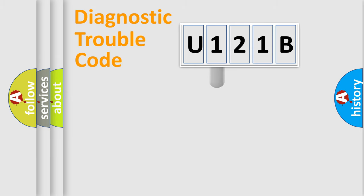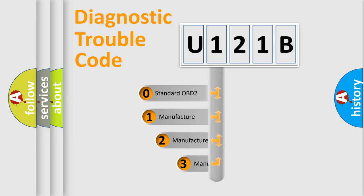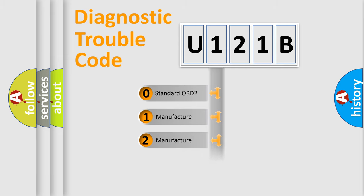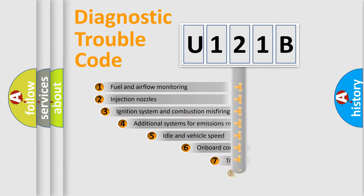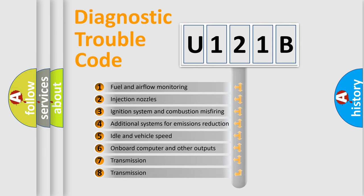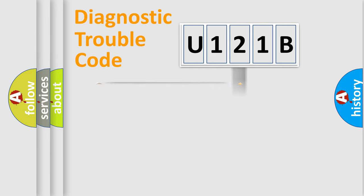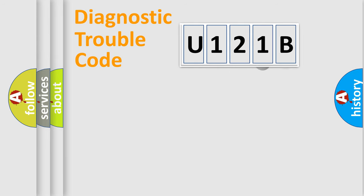This distribution is defined in the first character of the code. If the second character is expressed as zero, it is a standardized error. In the case of numbers 1, 2, or 3, it is a manufacturer-specific expression of a car-specific error. The third character specifies a subset of errors. This distribution is valid only for the standardized DTC code.